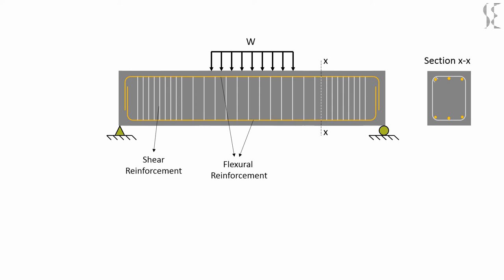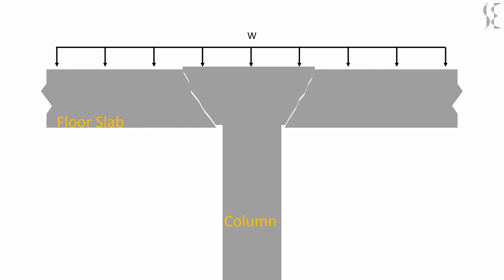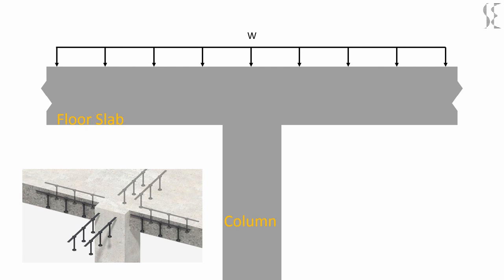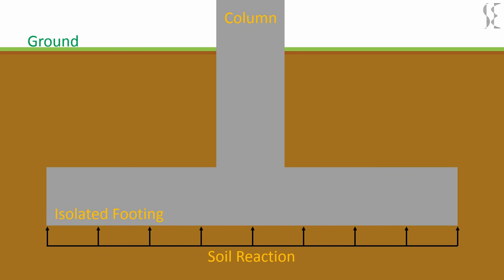Going back to our floor slabs and column illustrations, the two-way punching shear failure can be avoided either by providing stirrups reinforcement or shear strips, or by increasing the depth of the slab under the column, also called column drop. Similarly, the two-way punching shear failure in an isolated footing can be avoided by providing shear reinforcement or increasing the depth of the footing.